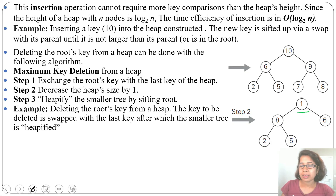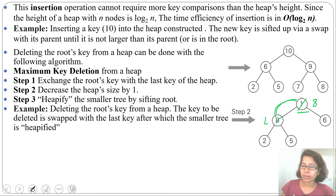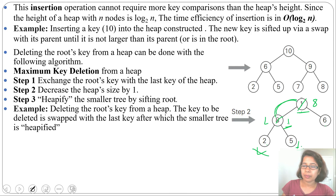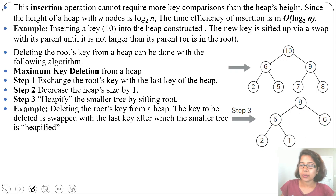We apply max heapify on 1: compare 1 with 8 — 8 is larger; compare 8 with 6 — 8 is still larger, so we swap 8 and 1. Then max heapify on the new position of 1: compare 1 with 2 — 2 is larger; compare 2 with 5 — 5 is larger, so swap 1 and 5. This is the new heap after deletion of node 9.